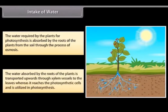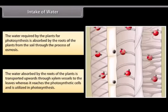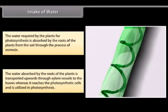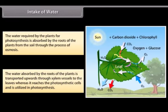The water absorbed by the roots is transported upwards through xylem vessels to the leaves where it reaches the photosynthetic cells and is utilized in photosynthesis.